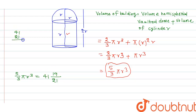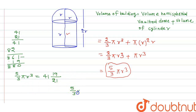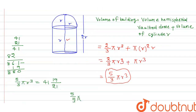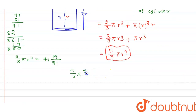So 41 and 19/21 equals 880/21. Now substituting: 5/3 × 22/7 × r³ = 880/21. Simplifying, we get r³ = 880/21 multiplied by the reciprocal, which simplifies to r³ = 8.